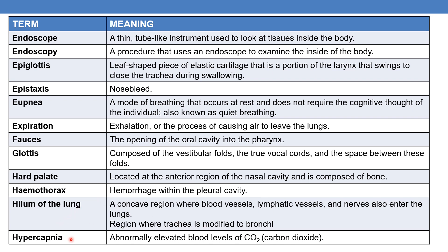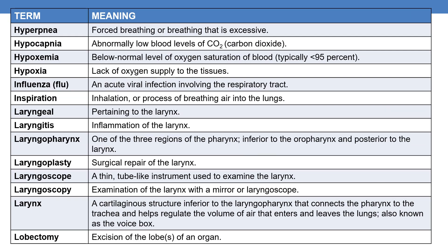Next is hypercapnia — abnormally elevated blood levels of carbon dioxide. Hyperpnea is forced breathing or breathing that is excessive. Hypocapnia, where hypo means deficit, is abnormally low blood levels of carbon dioxide.